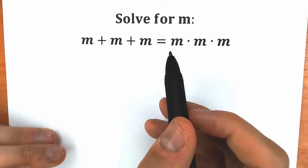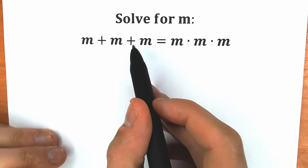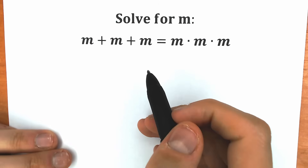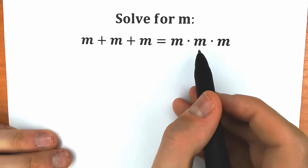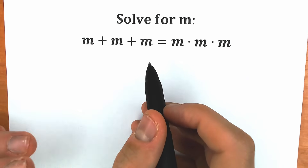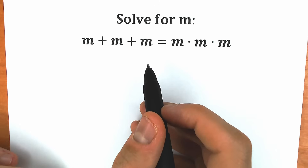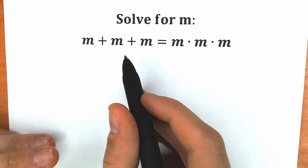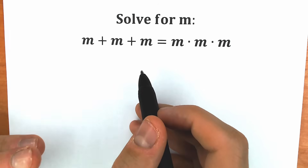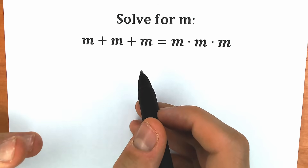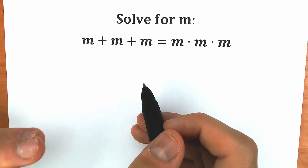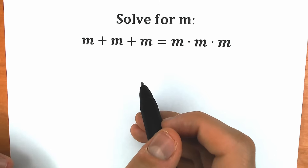m is equal to zero — we have zero plus zero plus zero equal to zero on the left side, and a product of three zeros equal to zero on the right. A lot of students say, 'Why do I need to solve it? We have m equal to zero.' But then I ask them: what about other solutions? Are you sure we will have only one root? Let's try to solve it.